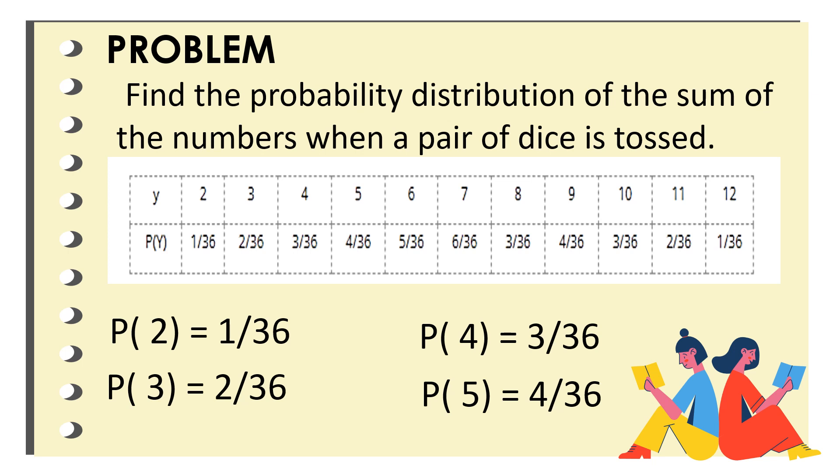The probability in which the sum is 5 is equal to 4 over 36. And so on, and so forth. So, that's all, guys. I hope you have learned something from this video. Be ready for our activity.